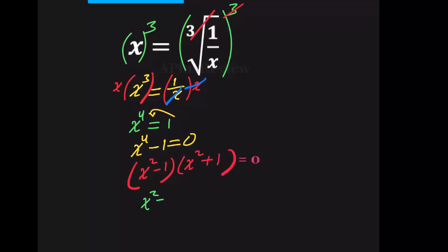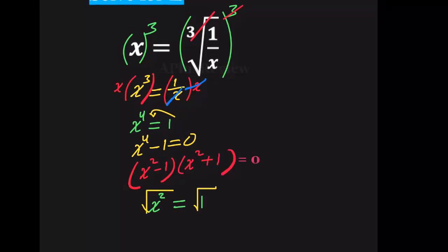We have x squared is equal 1, and we can put square root on both sides, so this and this cancel out, and we have x is equal plus or minus 1.